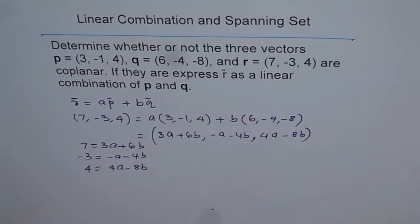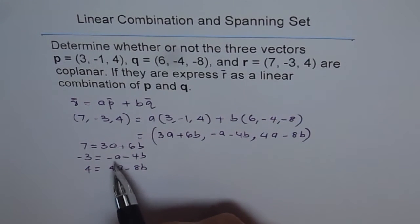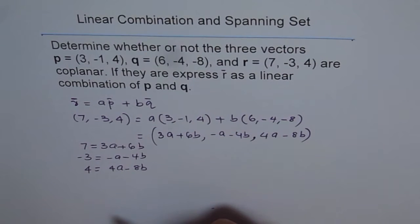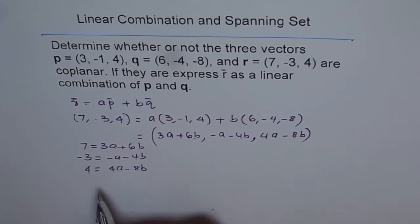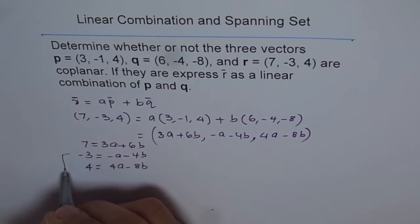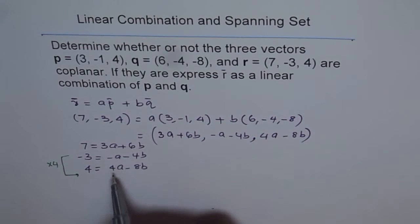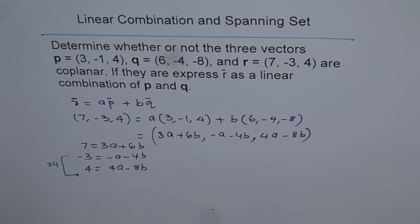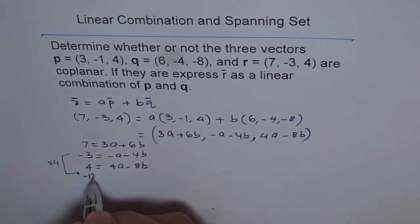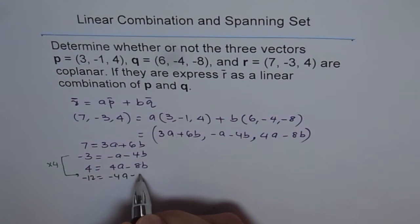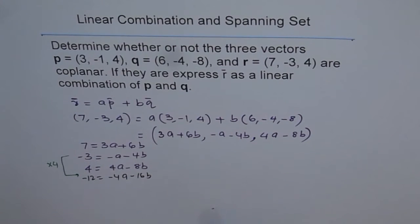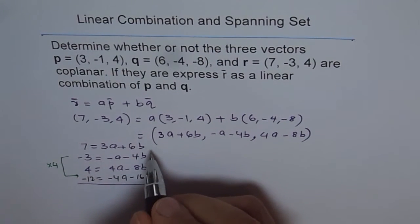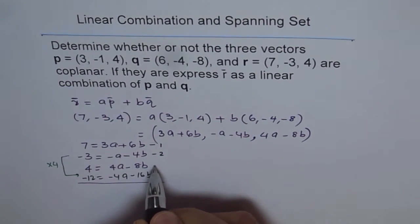We have three equations. We can solve for A and B from two of them, then substitute into the third to check. Let's label them equation 1, equation 2, and equation 3. We multiply equation 2 by 4 to make the A coefficients match, giving equation 4: -12 = -4A - 16B.